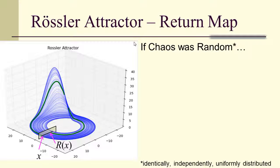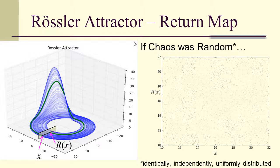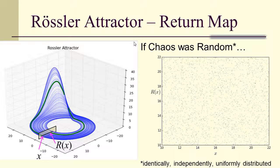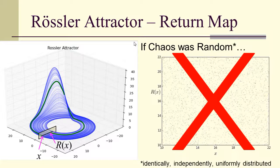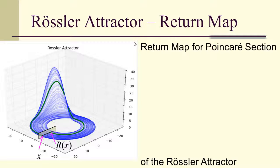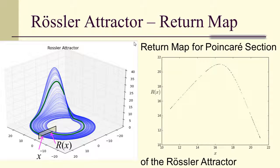Now, if chaos was random, and by that I mean identically, independently, uniformly distributed, then the return map would look like this. So given an x, the value of r of x would be random, and it would look like somebody took sand and poured it uniformly on some kind of a square grid. But the Rössler return map doesn't look anything like that. In fact, the return map for the Poincaré section of the Rössler attractor looks almost like a parabola. Even though it's a Cantor set, it's not a continuous curve, but it has this parabolic arc look to it.